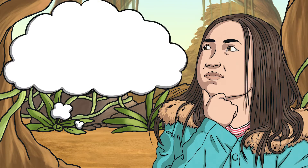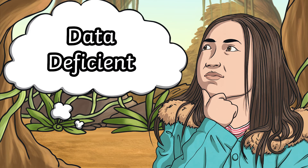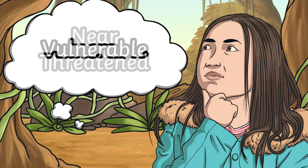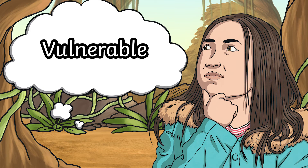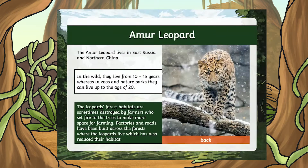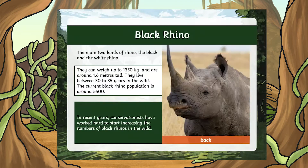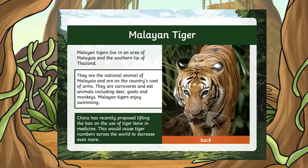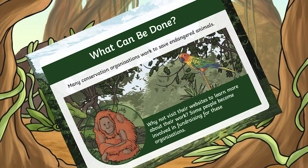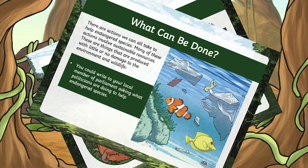They will also learn the meanings of keywords such as data deficient, near threatened, vulnerable, and critically endangered. The presentation outlines the different species, including plants, which are close to becoming extinct. It also features a few slides where children can think about how they can help these endangered species too.